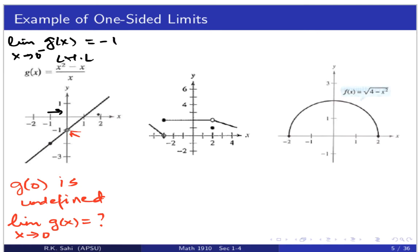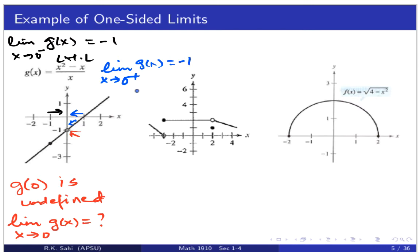Now let's look at the limit when coming from the right-hand side. I'm using colored markers: the left-hand limit in black, the question in red, and the right-hand limit in blue. Taking the limit as x approaches 0 positive, as the values of x approach 0, the function g(x) is going towards −1. Clearly the left-hand limit equals the right-hand limit, so the limit exists and equals −1.